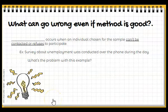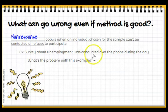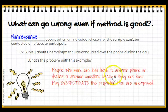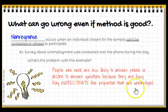Another problem that can create bias is called non-response. It occurs when an individual is chosen but they can't be contacted or they refuse to participate. For example: a survey about unemployment conducted over the phone during the day. People who are not working are available during the day, while those who are working are not. So people who are working are less likely to answer or decline to answer questions because they're busy. This could overestimate the proportion that are unemployed, because almost only those who are unemployed are going to respond to this survey.